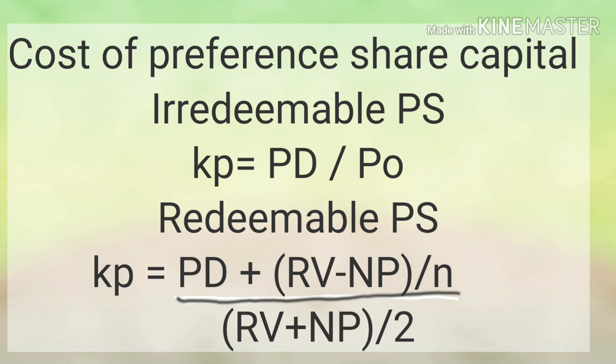Now let us look at the cost of preference share capital. For irredeemable preference shares: Kp = Pd / P0, where Pd is the preference dividend and P0 is the market value of the preference shares. Unlike debentures, the term (1 − t) is absent because preference dividend is not a tax deductible expense. For redeemable preference shares: Kp = [Pd + (RV − NP) / n] / [(RV + NP) / 2]. This is similar to the cost of redeemable debentures, with the only difference being the absence of the (1 − t) term.